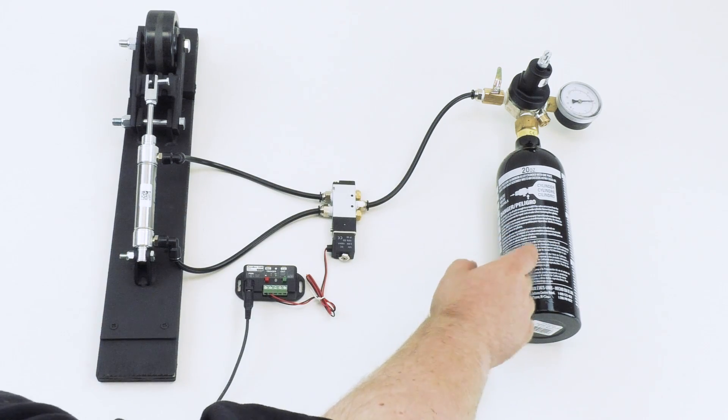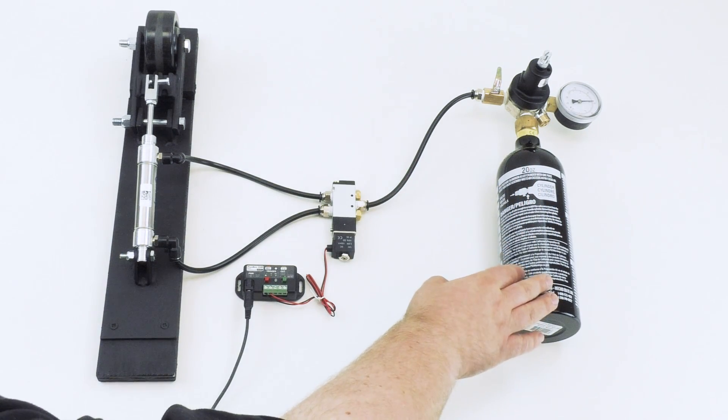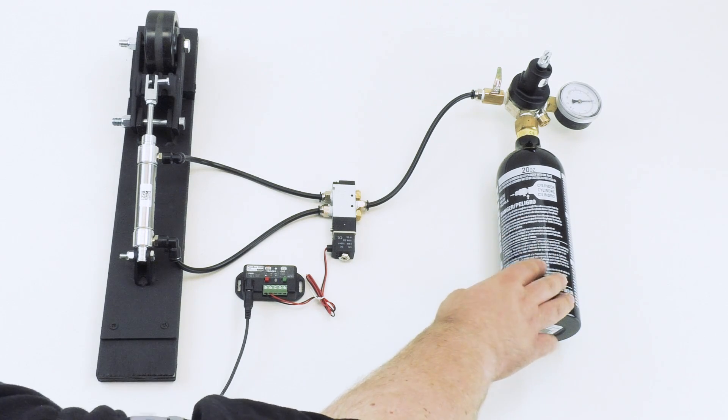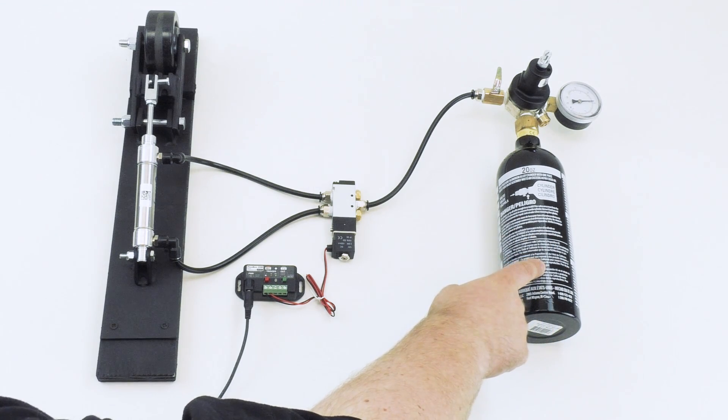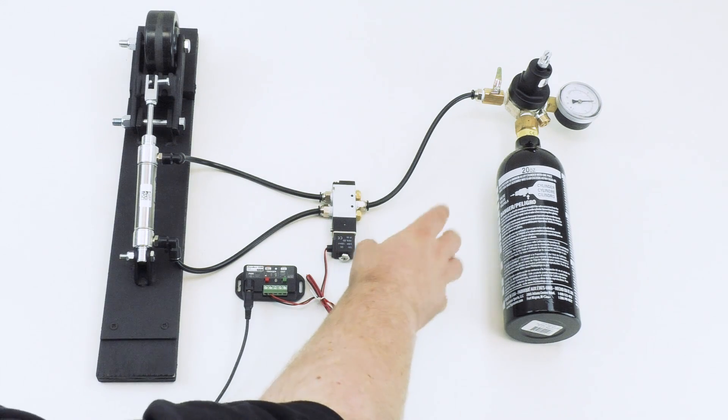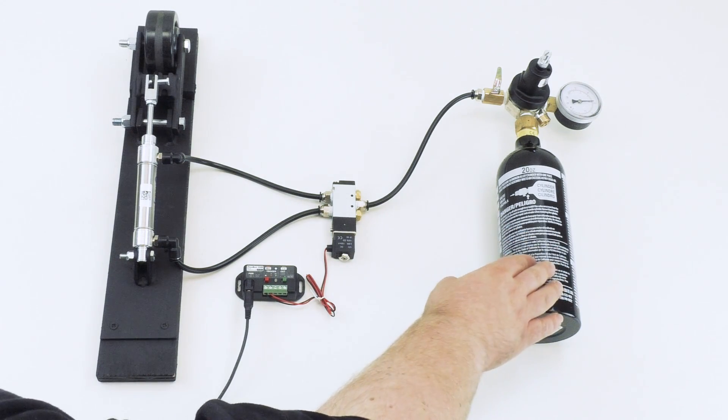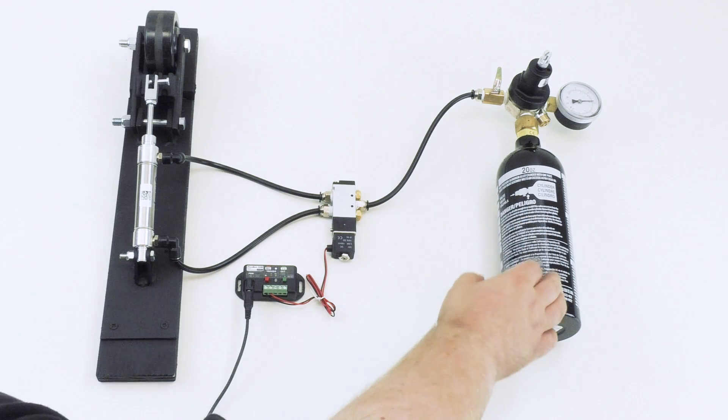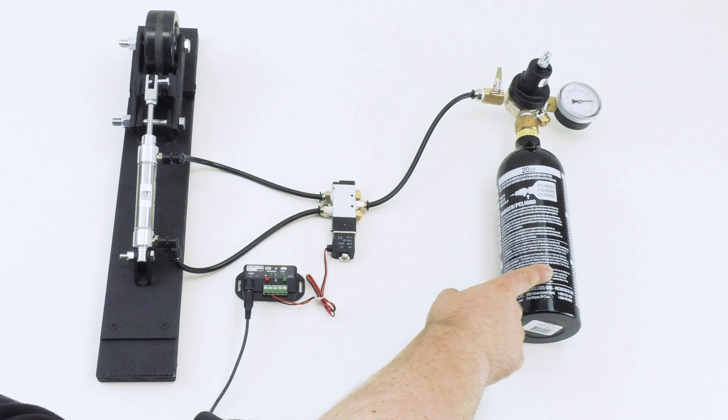The advantage of using CO2 is that it's compressed at a much higher PSI than standard air. A CO2 tank like this is compressed in excess of 800 PSI. That means that you can get many more actuations off a CO2 tank like this than you could off of a tank a similar size filled with standard compressed air, which might only be compressed up to 120, 150 PSI.